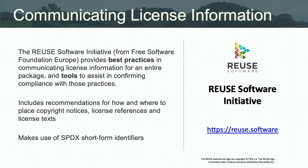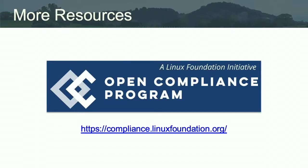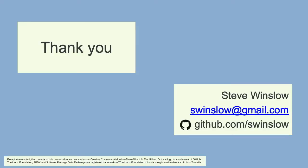The Reuse Software Initiative from the Free Software Foundation Europe provides additional best practices around this. What we're moving towards is that we don't need a ton of complicated scanning tools to get license information — it starts to become as easy as doing a grep for the SPDX identifier. If you're interested, the Open Compliance Program is one of the Linux Foundation's initiatives at compliance.linuxfoundation.org — it goes into fair bit of detail about the different steps for that process. Any final questions? Thanks everyone.